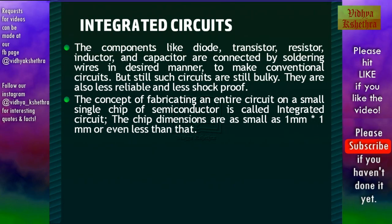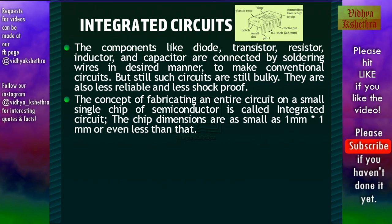Depending on the input signal of the integrated circuit, there are linear circuits in which the input signal is analog, and digital integrated circuits in which the input signal is a digital signal. The linear integrated circuit examples include the operational amplifier integrated circuit. The figure shows an example of an integrated circuit. As we can see, it consists of a chip enclosed in a plastic case, and the leads are the metal pin contacts.